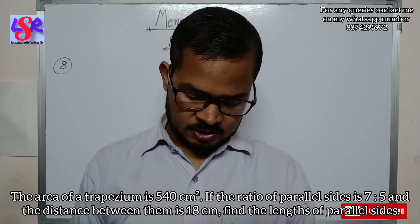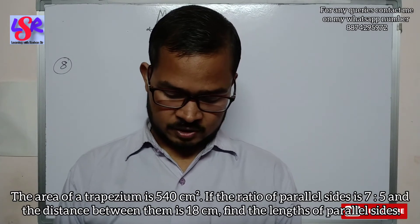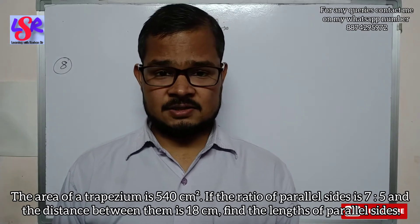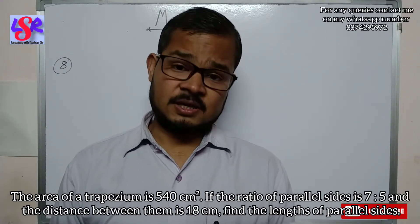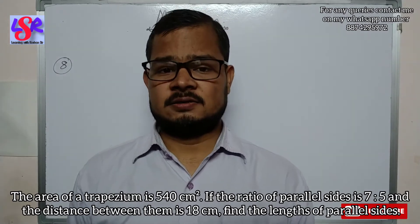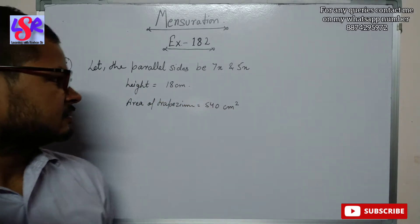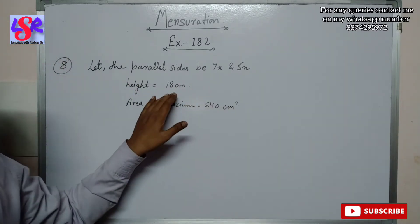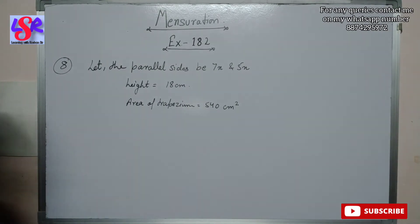Now we are going to do question number 8. The area of a trapezium is 540 centimeters square. The ratio of the parallel sides is 7:5 and the distance between them is 18 centimeters. We need to find the lengths of the parallel sides. Let the parallel sides be 7x and 5x. The height is 18 centimeters and the area is 540 centimeters square.